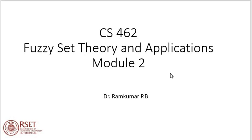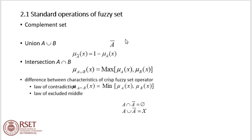Fuzzy Set Theory and Applications, module 2. Standard operations of Fuzzy set: Complement of Fuzzy set is denoted as A-bar, where mu A-bar of x equals 1 minus mu A of x. Union is mu of A union B, which is equal to maximum of mu A of x and mu B of x. Intersection is mu of A intersection B equal to minimum of mu A of x and mu B of x.